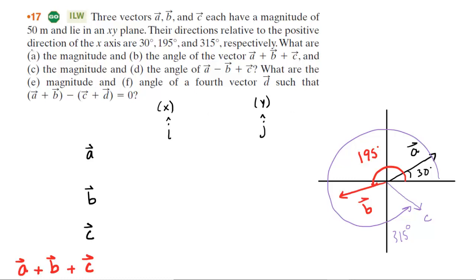We're going to be solving parts A and B in tandem because they both relate to the quantity vector A plus vector B plus vector C. Whenever you're adding vectors, the first thing you want to do is make a picture of the vectors so you can visualize what's going on. We've drawn a picture on the right side of the screen. We have the three vectors marked A, B, and C with their respective angles of 30, 195, and 315 degrees, and they each have a magnitude of 50 meters.